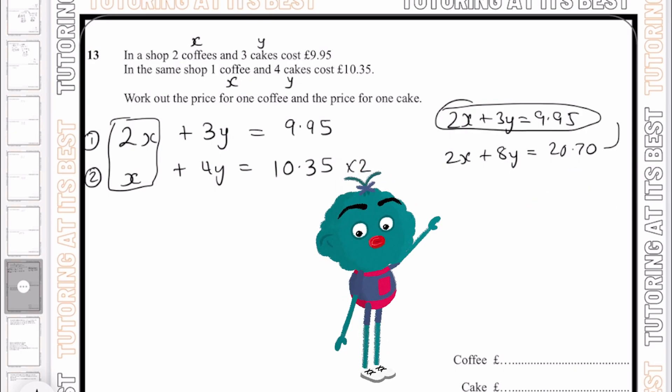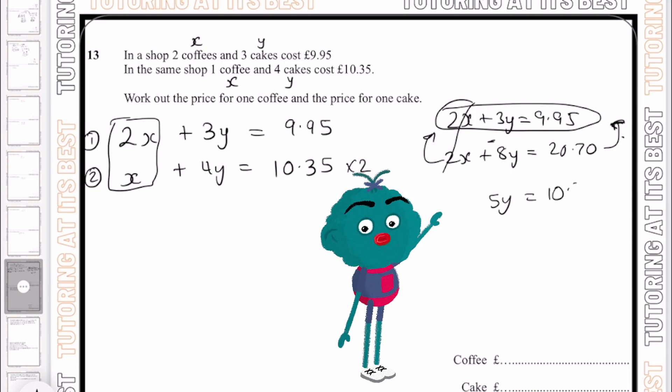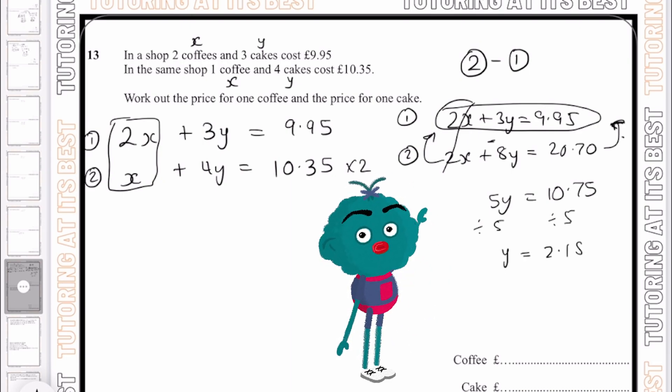So 2 take away 2 is nothing, so we can cancel that out. 8y take away 3y gives us 5y. And £20.70 take away £9.95 gives us £10.75. Now that I've done that, I can divide both sides by 5. So now I know that y will equal £2.15.